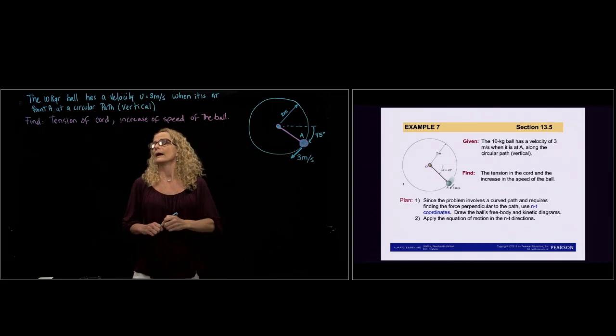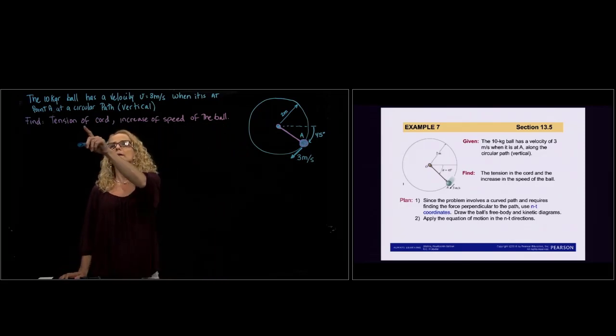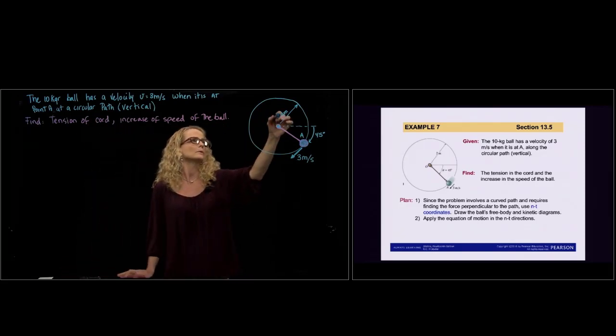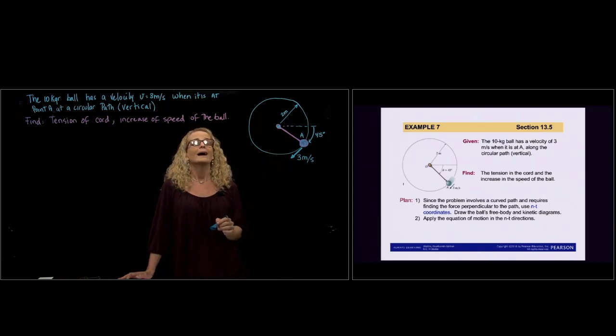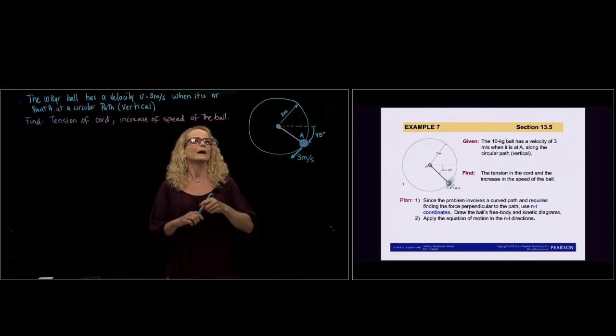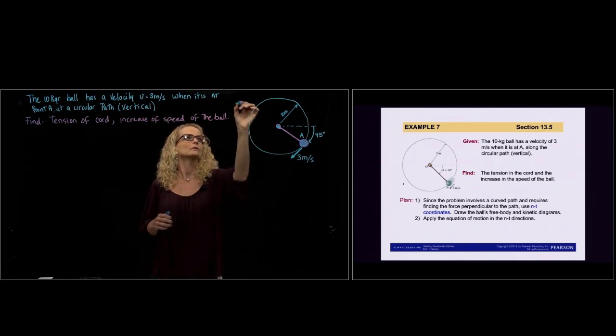And then they tell us that the path is circular with a radius of 2 meters, and they tell us that it's vertical. What does it mean that it's vertical? That we have gravity, the action of the gravity.